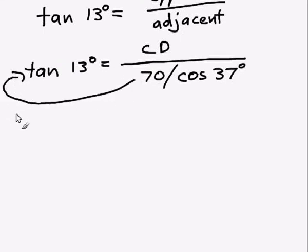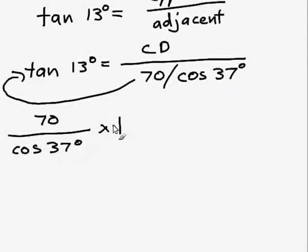So if we move the 70 on cos 37 to the other side, we get 70 on cos 37 degrees times TAN 13 degrees equals the side length they're trying to find out CD.